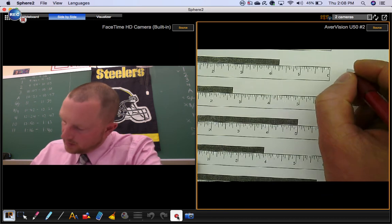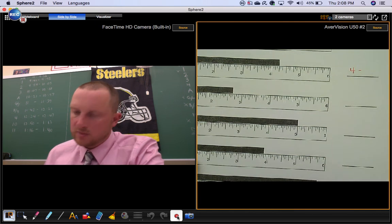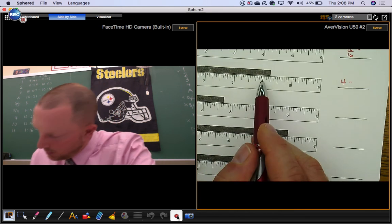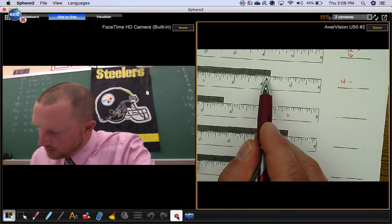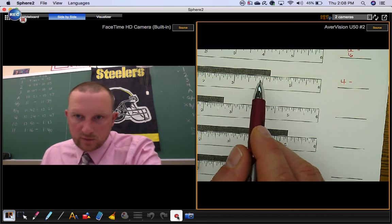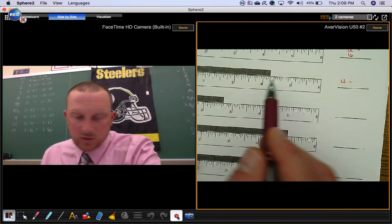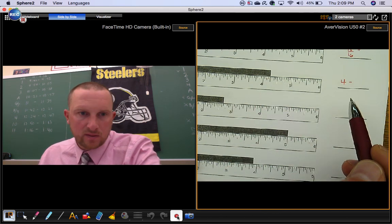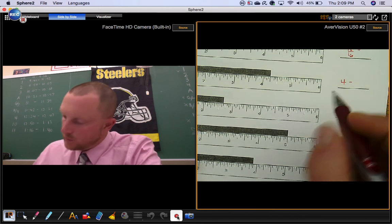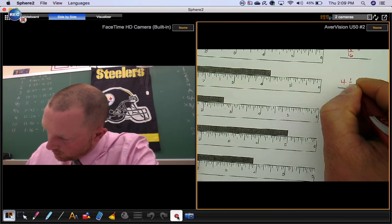This next one is definitely bigger than four inches. How many little lines passed? Well you could count the spaces. It's four little spaces which would be four sixteenths. But that reduces. Four sixteenths reduces to one fourth.